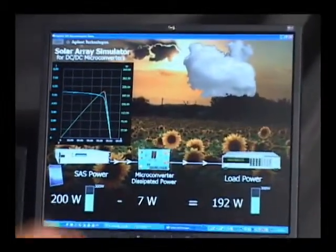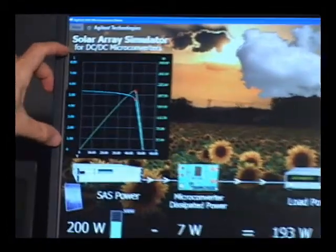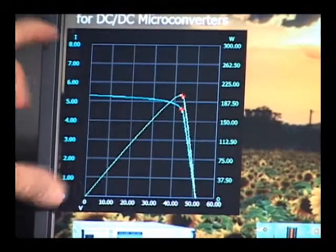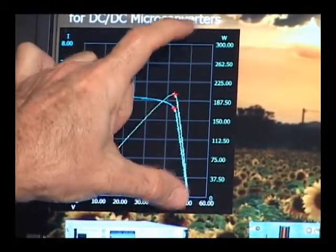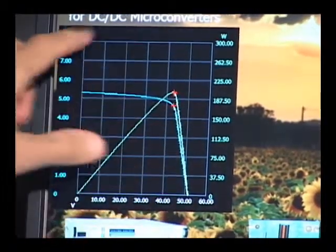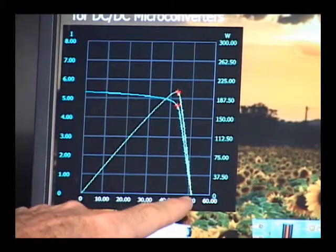On the software there's a graph that shows current on the vertical axis on the left side here in blue and on the right side in green is the power. So the IV curve is shown in blue, I being current, V on the horizontal axis being voltage.